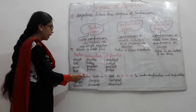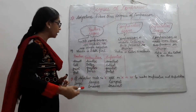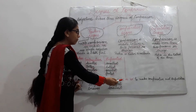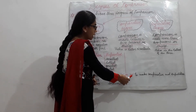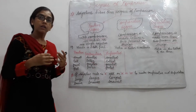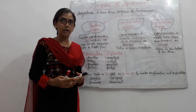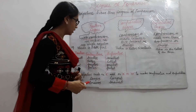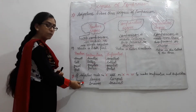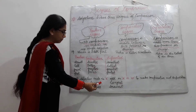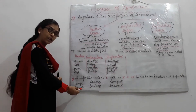Another rule is: if an adjective ends in -e, agar kisi adjective ke end mein 'e' aata hai, toh comparative banane ke liye we add -r, aur superlative banane ke liye we use -st. For example, positive is 'large'. Large ke end mein 'e' aata hai. Comparative banane ke liye 'r' lagaenge: 'larger'. Superlative banane ke liye 'st': 'largest'. Another example is 'brave'. Brave ke end mein bhi 'e' aata hai — similarly, 'braver', 'bravest'.